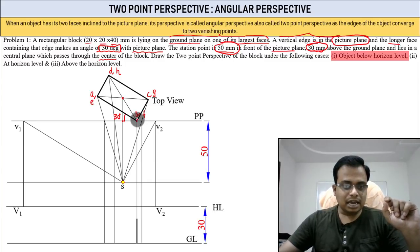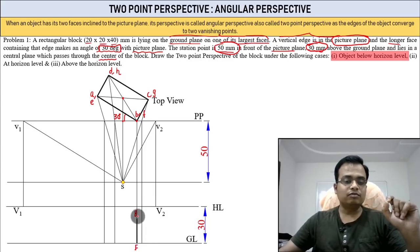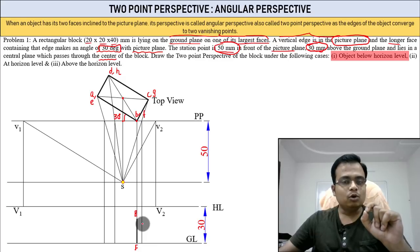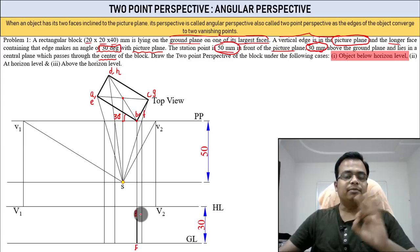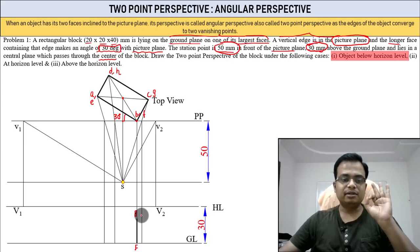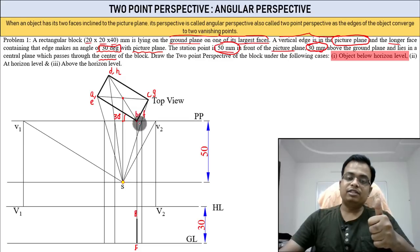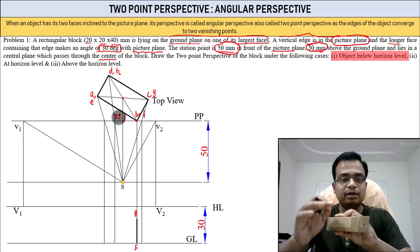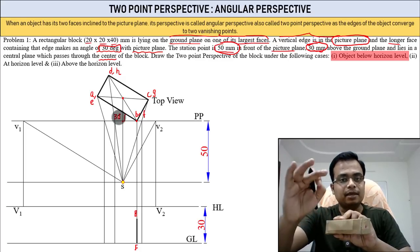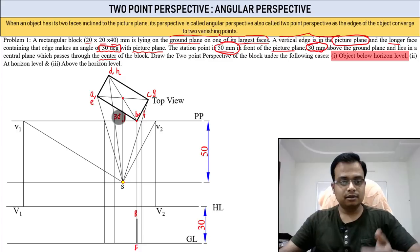The four top corners are A, B, C, D — this edge in the picture plane has B at the top and F at the bottom. So F-B equals 20 millimeters. It's shown in true length because it is in contact with the picture plane, and the face makes a 30-degree angle with the picture plane.